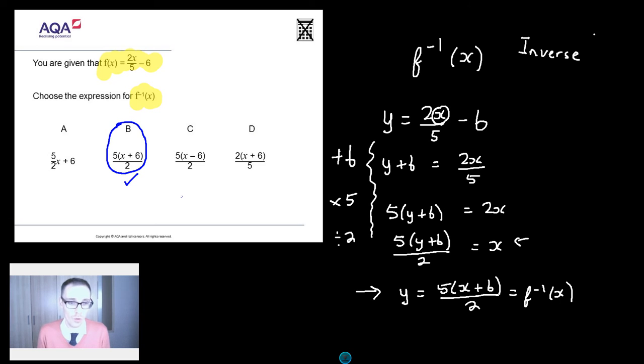Where do some of these other wrong answers come from? So how might you end up with 5 over 2 x plus 6? Well I reckon you're going to get this if you are not careful with your division. So imagine when I got to this point here. If when I divided by 2 I simply divided the 5 by 2 to leave myself with 5 over 2 x plus 6.